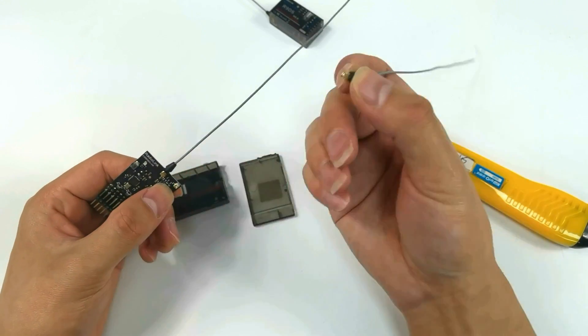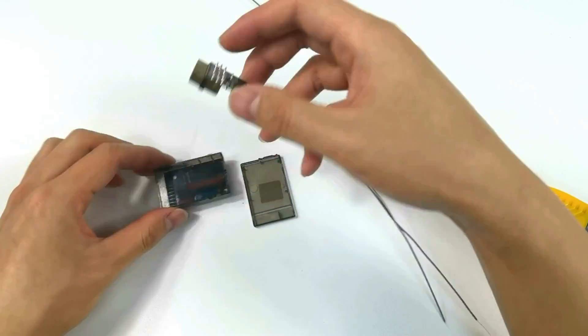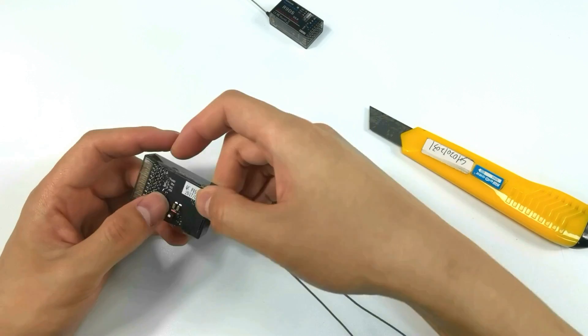R12DS has two antennas and it also has IPEX connectors. Unplug the old one and plug in the new one.